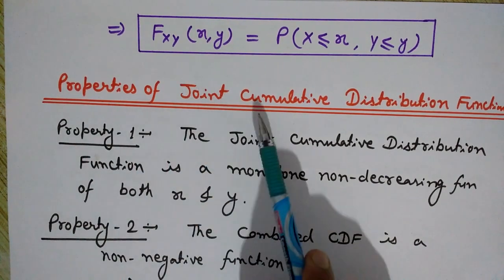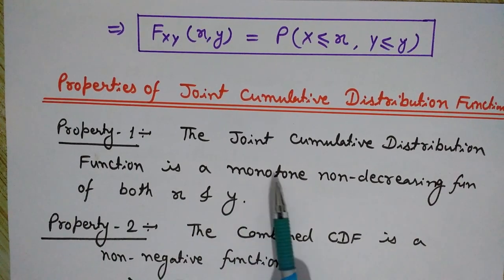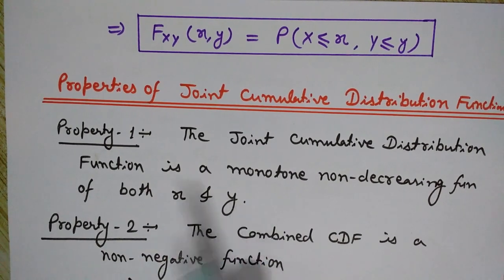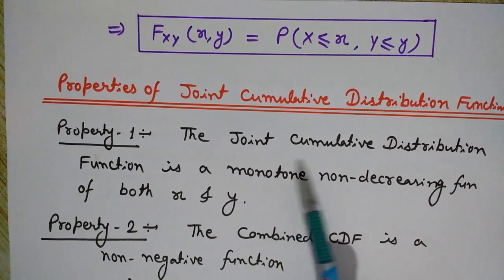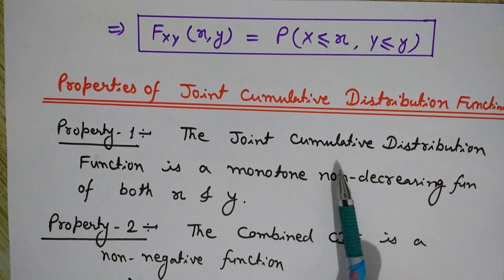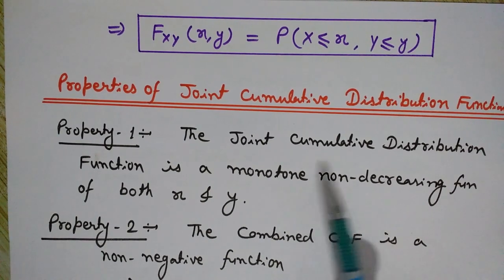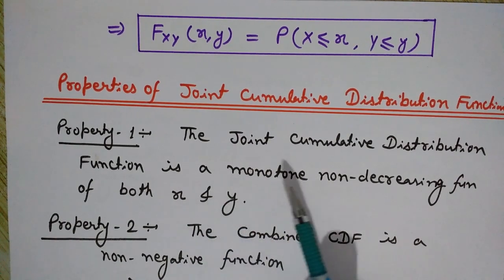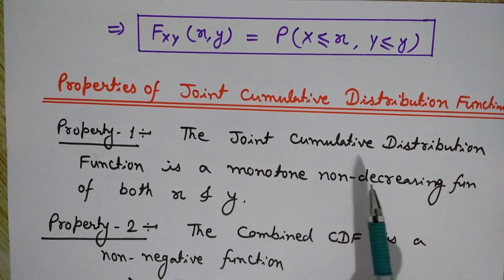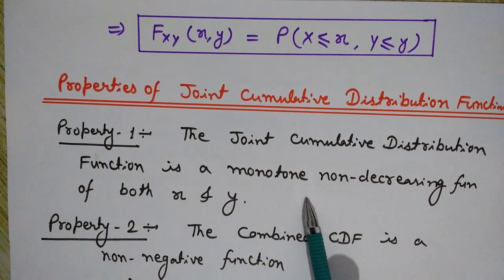Now we will see the properties of the joint cumulative distribution function. Property number one: the joint CDF is a monotone non-decreasing function of both X and Y. I recommend watching my previous CDF video, linked in the description. Previously, the single-variable CDF was a monotone non-decreasing function of X; here, the joint CDF does not decrease in either X or Y.